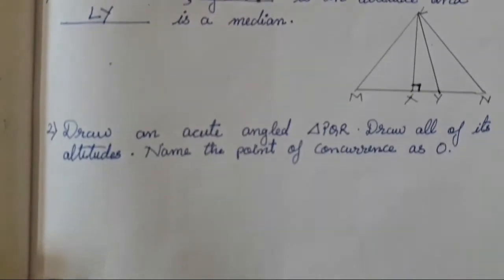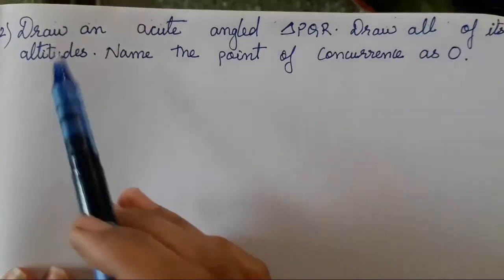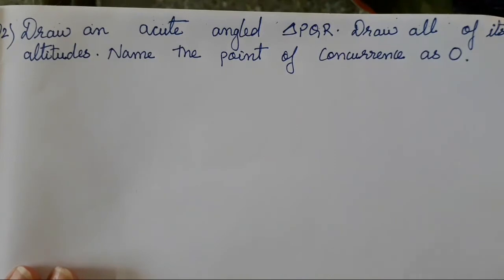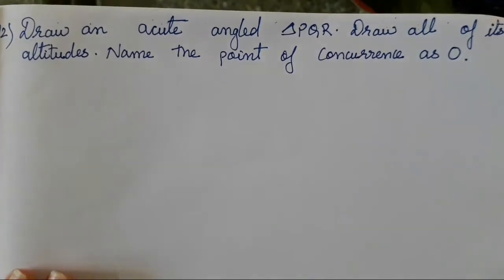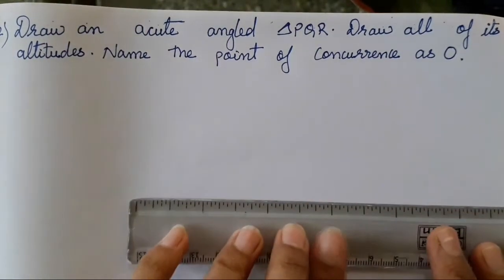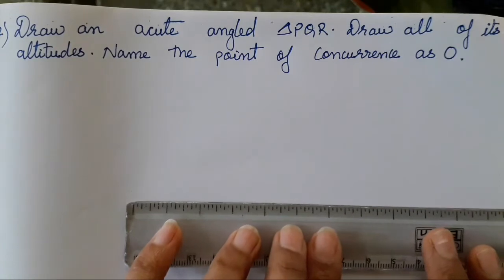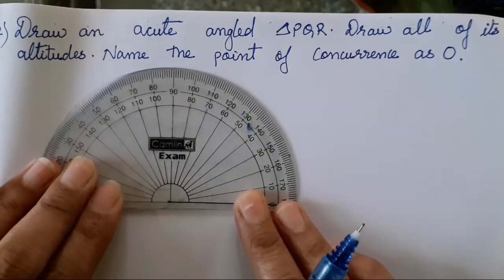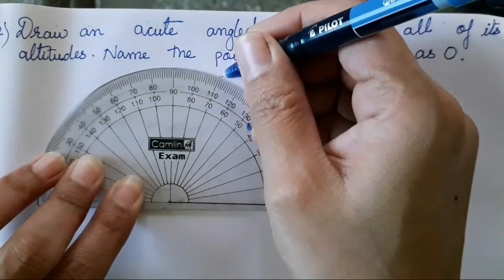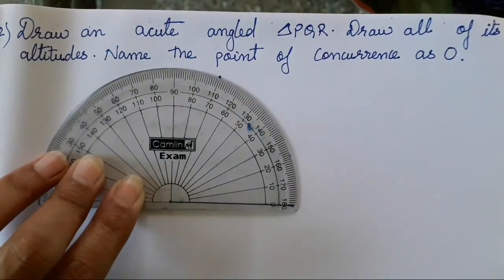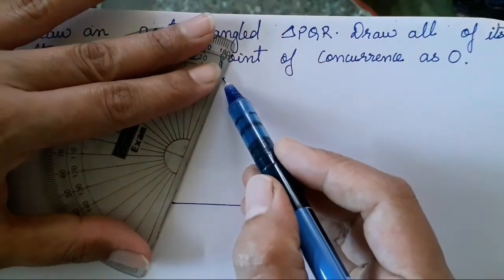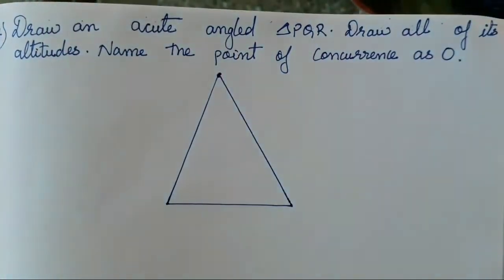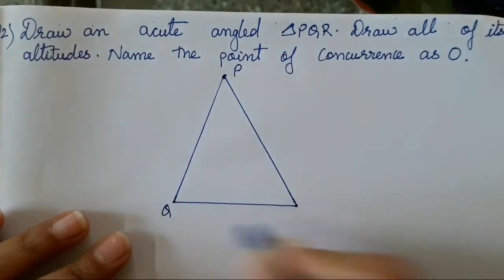Now we have to construct an altitude using an acute angle triangle in the next question. The question is: draw an acute angle triangle PQR and draw all its altitudes. So we have to draw all the altitudes and name the point of concurrence as O. Let's start by drawing a triangle - an acute angle triangle which can be of any measure. First we will draw a line, then from this line draw an acute angle, suppose 70 degrees. From 70 degrees, draw two segments so that your triangle will be formed.